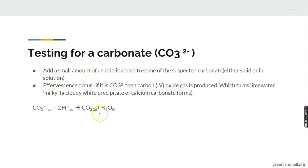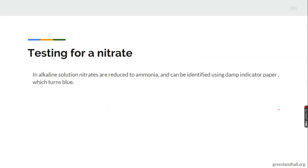Testing for carbonate: add acid to the suspected solution. Any compound containing carbonate ion will evolve CO2 gas. To confirm it is CO2, pass it through lime water — if the lime water turns milky, that confirms calcium carbonate formation, indicating carbonate ion is present. Testing for nitrates: in alkaline solution, nitrates are reduced to ammonia and can be identified using damp litmus paper. When you put a damp red litmus paper and it turns blue, nitrate is confirmed.